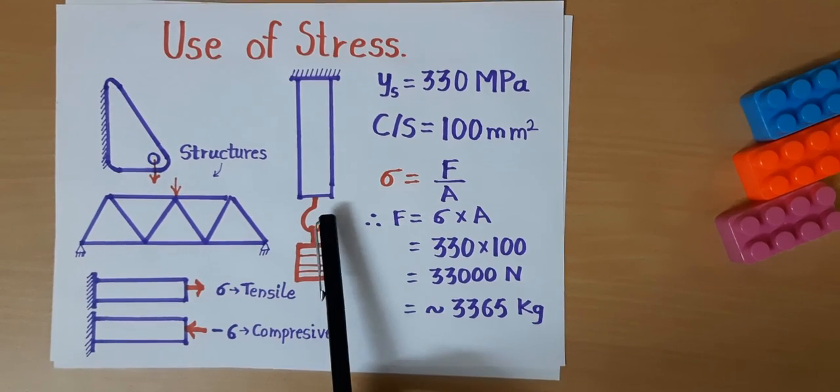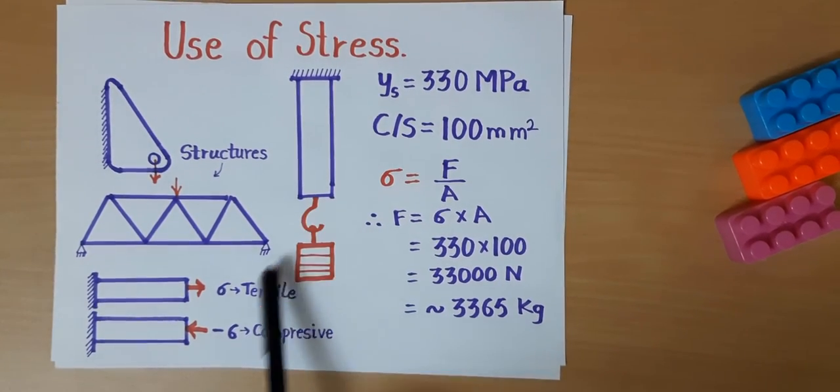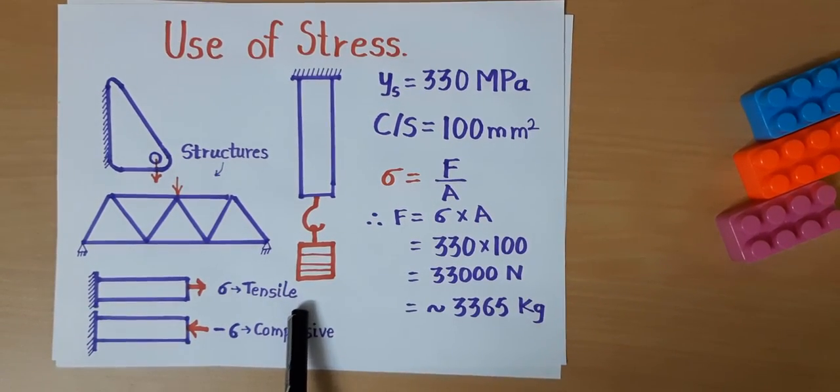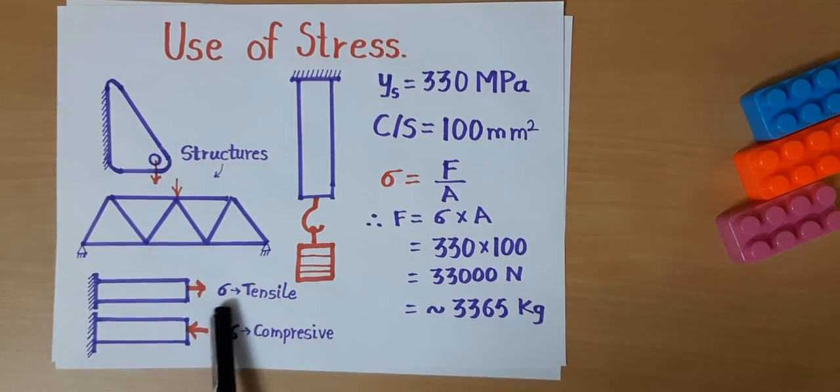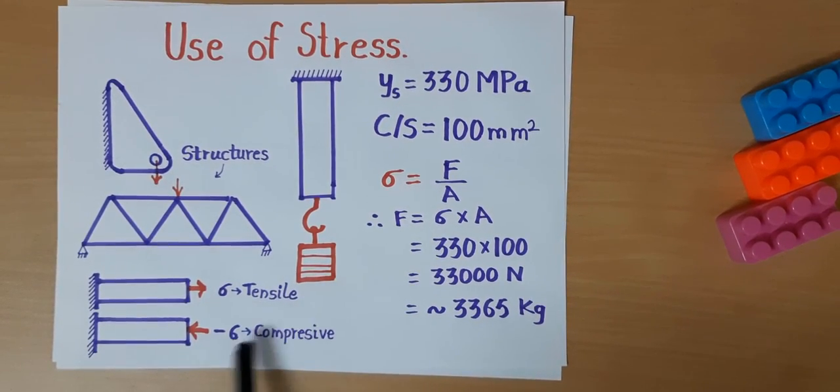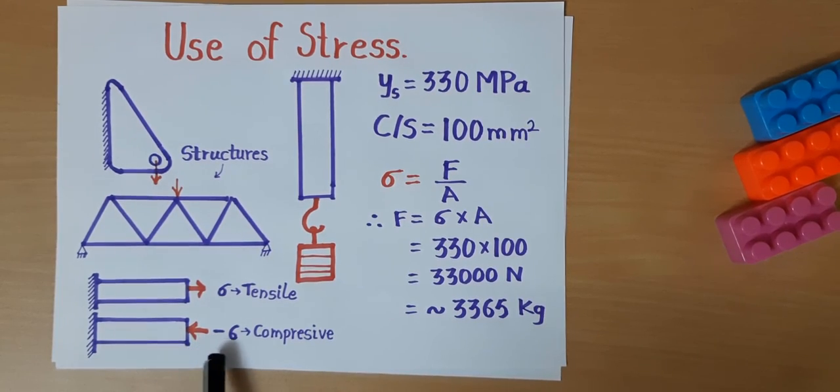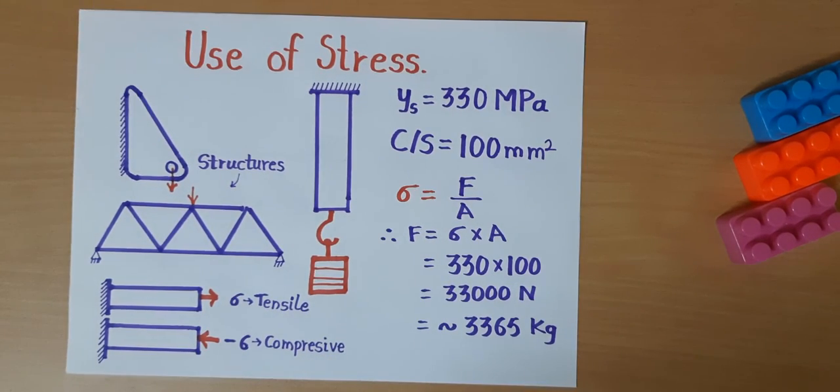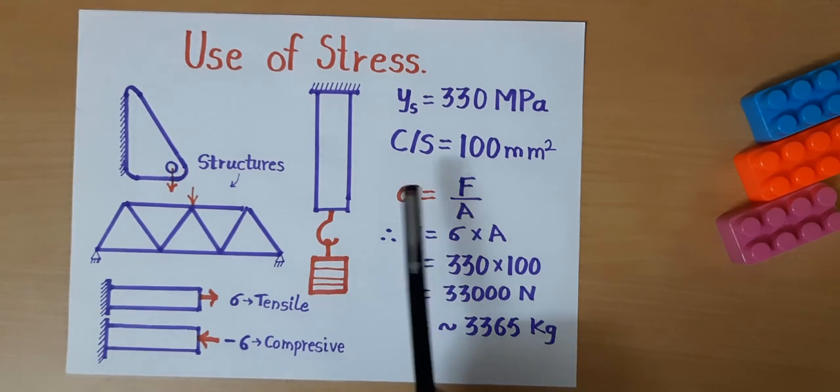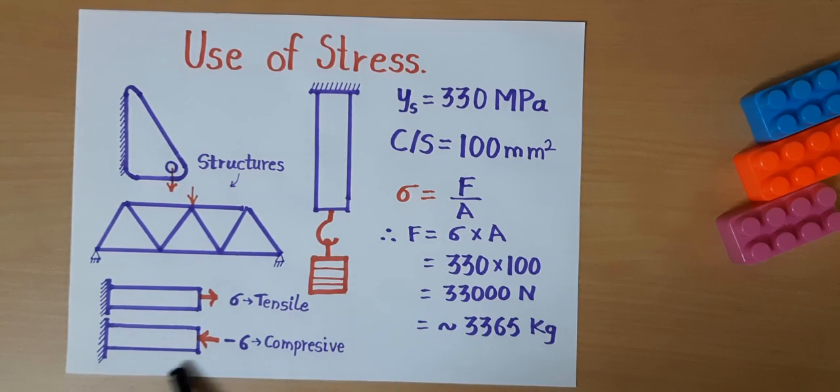The load applied to this square rod is tensile load, denoted by the positive sign. But if we try to compress the square rod, then it is denoted by negative. Negative sign indicates the stress generated is compressive in nature. Likewise, we can use the same principle on all structures to calculate weight lifting capacity or stress.